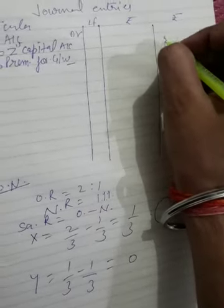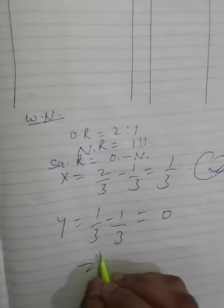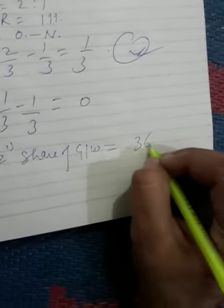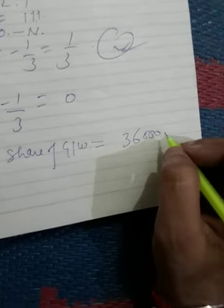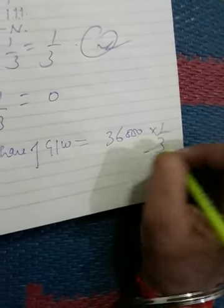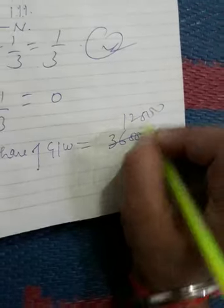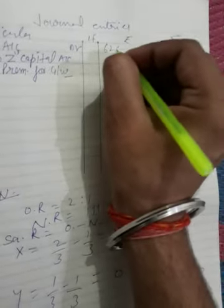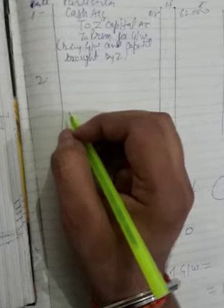Z brings ₹50,000 for his capital. Now, the firm's goodwill is given, but we need to calculate Z's share. Z's share of goodwill equals the firm's goodwill of ₹36,000 multiplied by 1/3, which equals ₹12,000. This amount is also brought by Z in cash, so we write Premium for Goodwill ₹12,000, and the total amount will be ₹62,000. The narration will be: Being goodwill brought by Z.